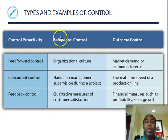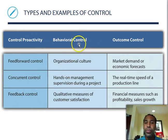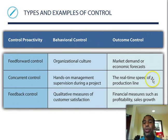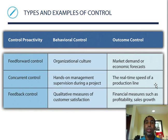Types of control: you have feed-forward control, concurrent control, and feedback control. For behavioral control, you have organizational culture, hands-on management supervision, and qualitative measures of customer satisfaction. For outcome control, you have market demand and economic forecasts, real-time speed of a product line, and financial measures such as profitability, sales, and growth — how profitable were we, how much did we sell, and how much did our sales grow?